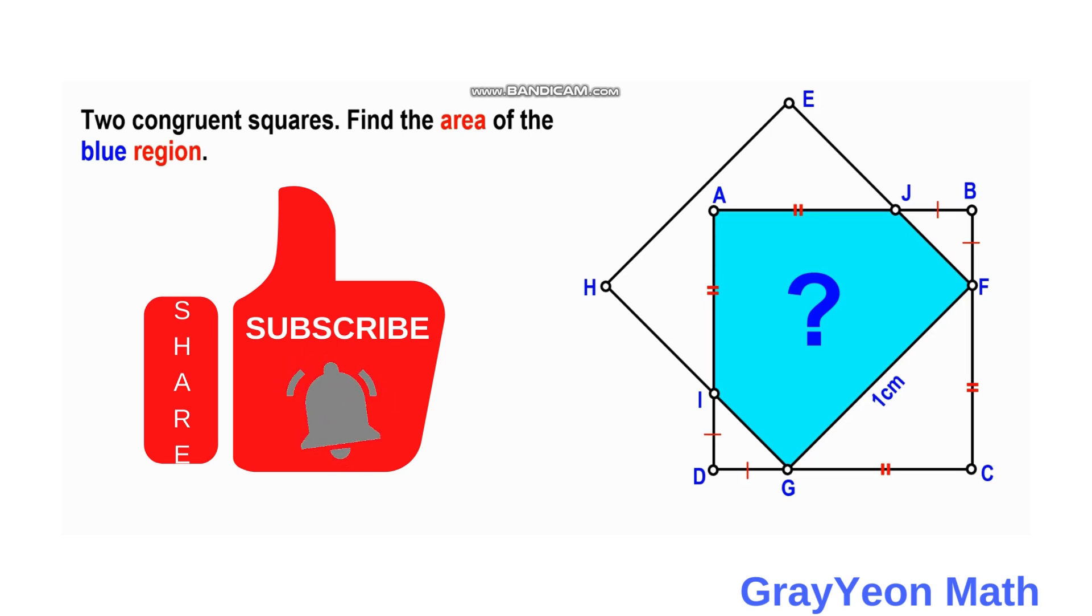Welcome to GrayonMath. We are asked to solve this problem. We have two squares of the same side length 1 cm arranged as shown to overlap at this blue shaded region, and we are required to find the area of this blue region.